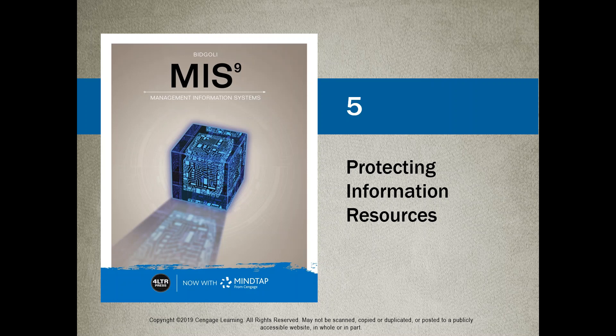Welcome back. This is chapter number five of the CSIS 2200 Managing an Information System, entitled Protecting Information Resources.